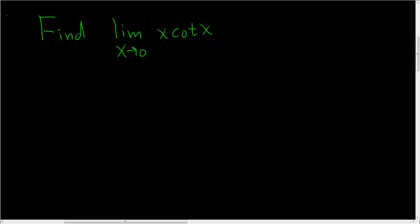We have to find the limit as x approaches 0 of x times the cotangent of x. Solution: If you plug in 0 from the beginning, you get 0 times cotangent 0, which is 0 times cosine 0 over sine 0, because cotangent is cosine over sine.